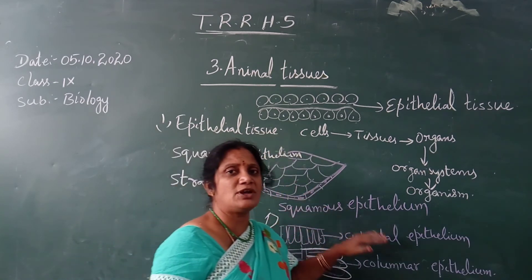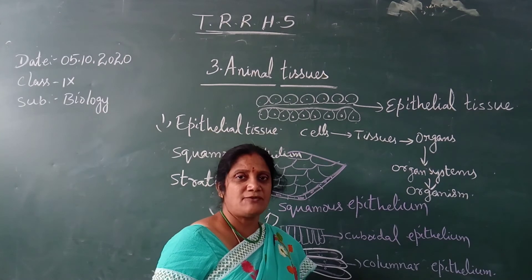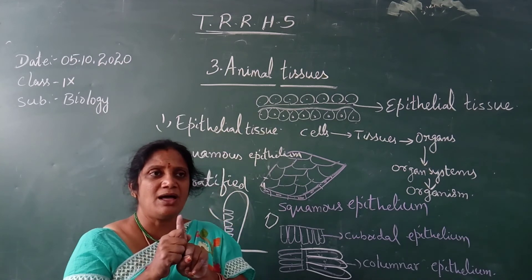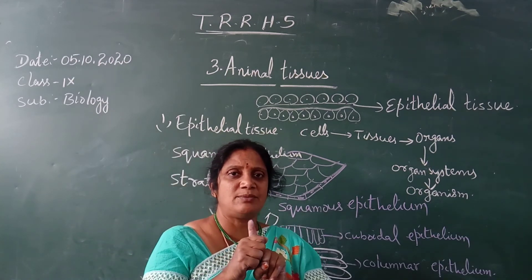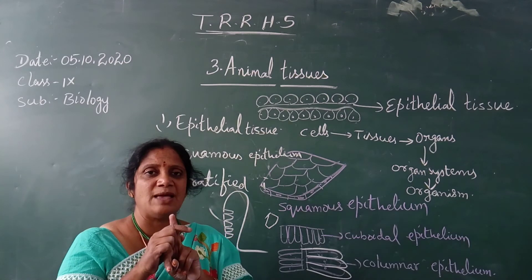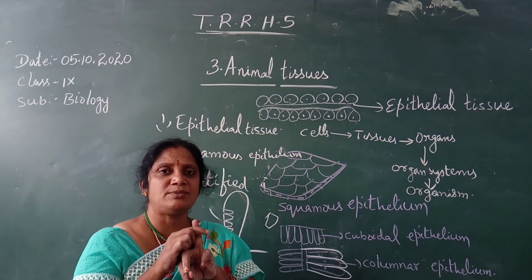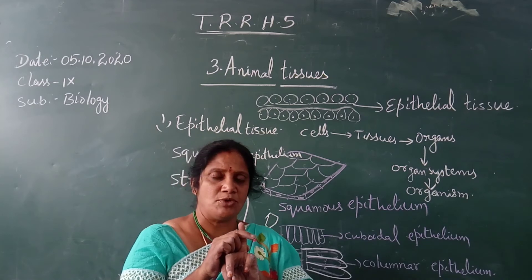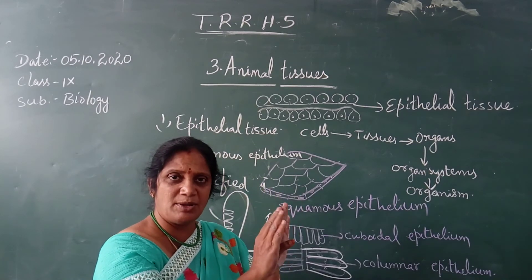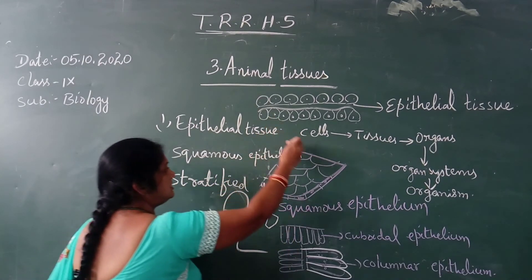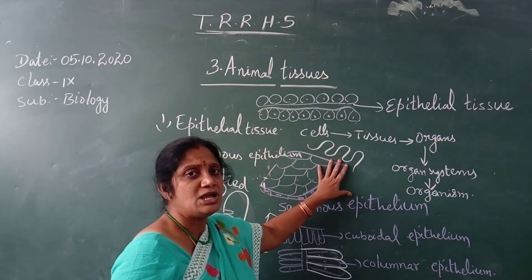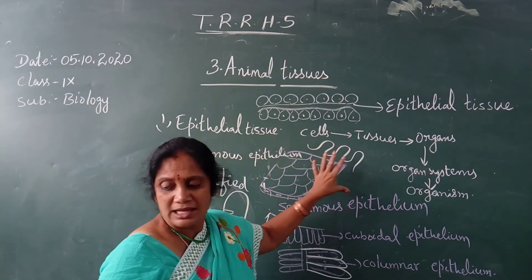Now we will discuss the main functions of epithelial tissue. The first function is that it offers protection — it protects the body parts from external damage and from invasion by microorganisms. The second function is that it helps in the absorption process. The third function is that it helps in the secretion process. Sometimes this epithelial tissue may be folded, and in that folded form it is called glandular epithelium.